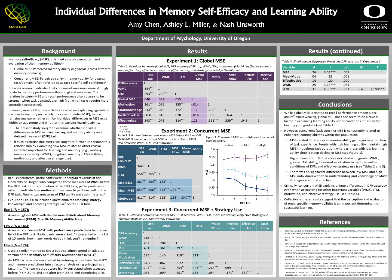Experiment 3 sought to replicate and extend Experiment 2 by also measuring Concurrent MSE via an alternative method. We used a valid, commonly used Concurrent MSE questionnaire to ensure the results from Experiment 2 weren't due to the measure used. Critically, Experiment 3 replicated Experiment 2 insofar that higher MSE was associated with better learning ability as measured by recall accuracy. Results also revealed that while MSE was unrelated to knowledge of which strategies are best, higher Concurrent MSE was related to use of more effective encoding strategies.